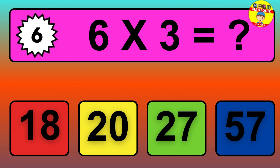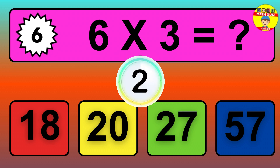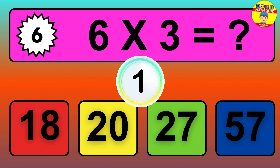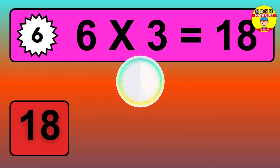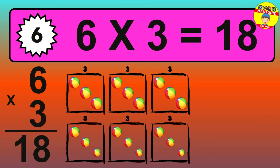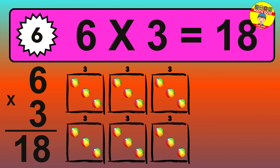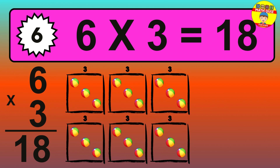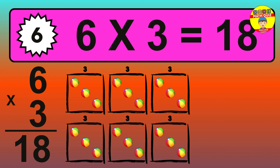Question 6. 6 times 3 equals what? The answer is 6 times 3 is 18. To calculate, we have 6 groups with 3 balls each one. So, how many balls do we have? 18 balls.